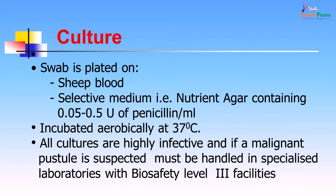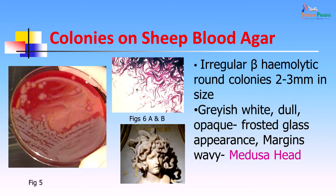For culture, a swab was plated on sheep blood agar and a selective medium — nutrient agar containing penicillin. It was incubated aerobically at 37 degrees centigrade. All cultures are highly infective if malignant pustule is suspected; they must be handled in specialized laboratories with biosafety level 3 facilities and all work must be done in a biosafety cabinet. The colonies on sheep blood agar showed irregular beta-hemolytic colonies 2 to 3 millimeters in size with a zone of hemolysis around them.